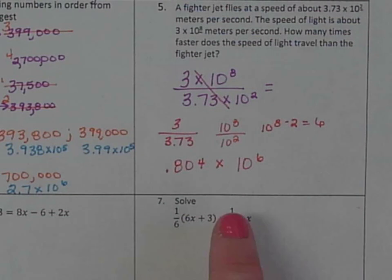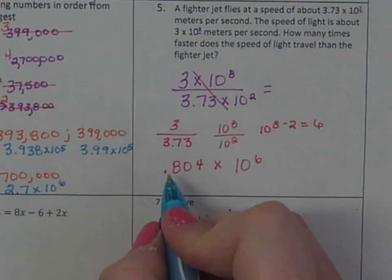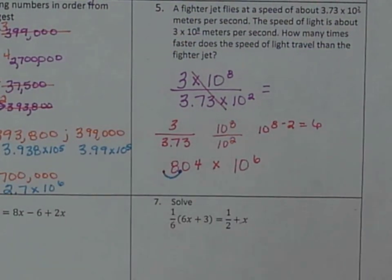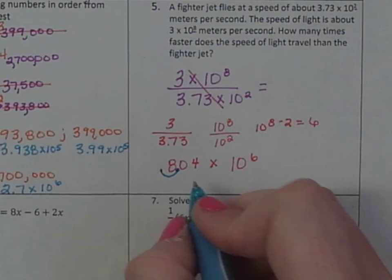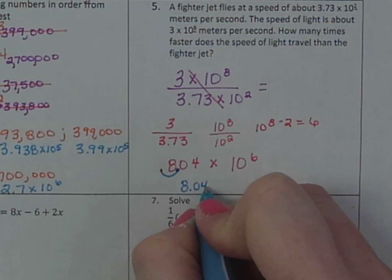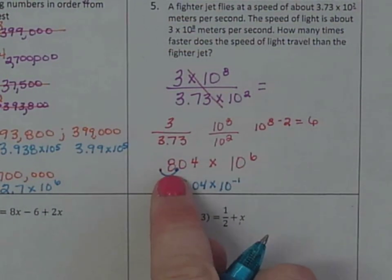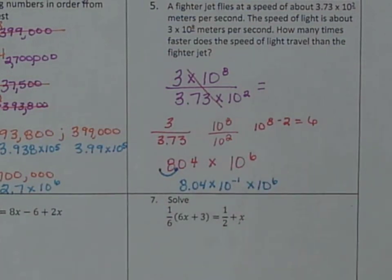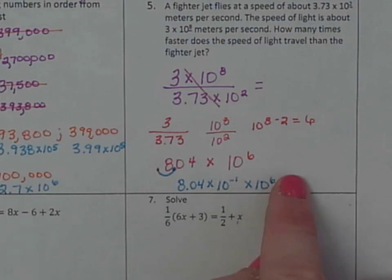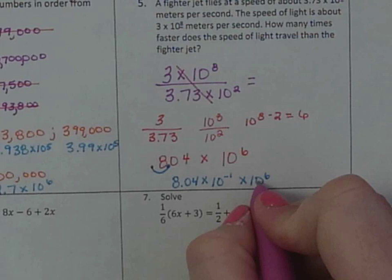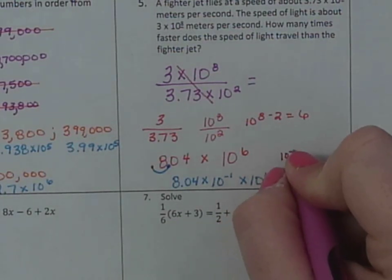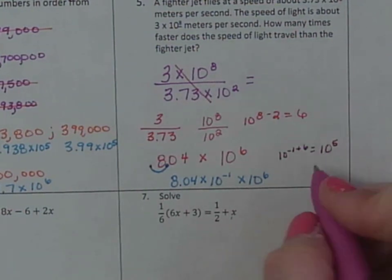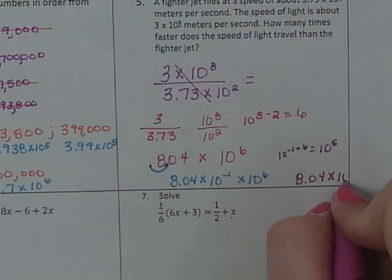But there's an issue with this problem. It is not actually written in scientific notation, because this number is not between 1 and 10. So I'm going to have to move the decimal one time. So it would be 8.04 times 10 to the negative 1st, and I know it's a negative 1st because the number was smaller than what I ended up with, times 10 to the 6th. If I have negative 1 and 6, remember you have to do negative 1 plus 6. 10 to the negative 1 plus 6 would equal, if I owe you a dollar and I give you 6, I gave you 5 extra. So it would be 8.04 times 10 to the 5th.